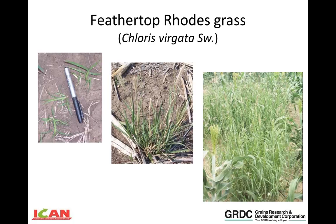As the plant gets bigger, the other really obvious identification trait is the seed spikelets and panicles. The panicles remain very erect with feathertop Rhodes grass, as opposed to common Rhodes grass where they splay out. Under dry conditions the plant can move very quickly into flowering on a relatively small plant, but under good moisture conditions it can grow very large — up to 50–70 centimetres tall — and as you can see in that photo, it's basically out-competing a sorghum crop. So it can be very aggressive.